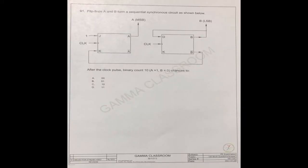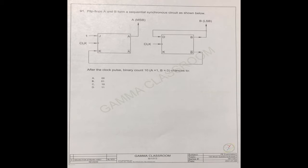Question No. 91. Flip-flops A and B form a sequential synchronous circuit, as shown below. After the clock pulse, given the count 1, 0 — meaning A equals 1, B equals 0 — what does it change to? The answer choices are A, B, C, and D.